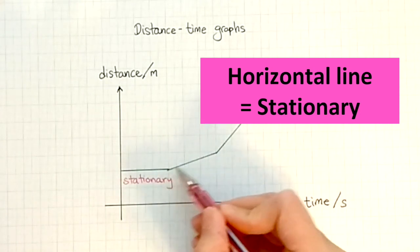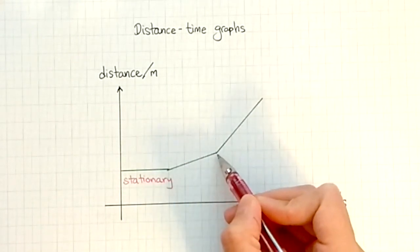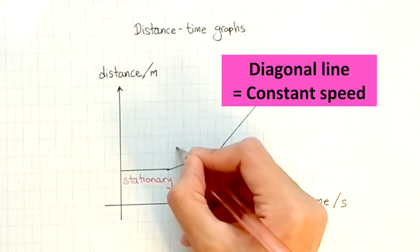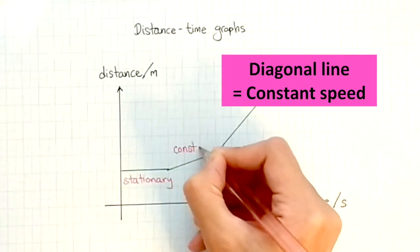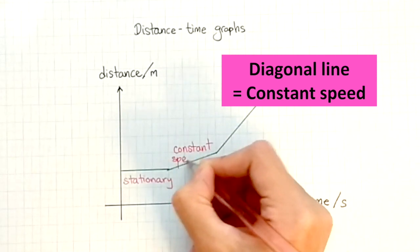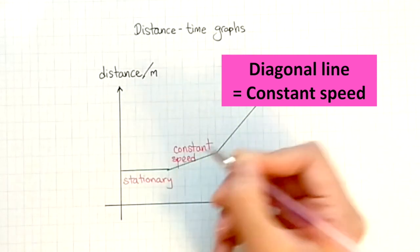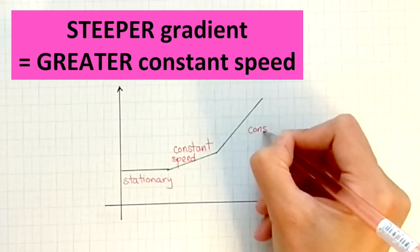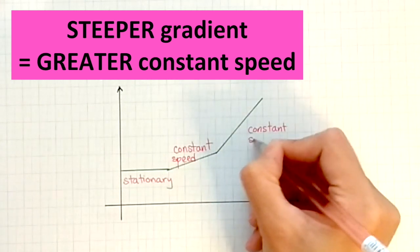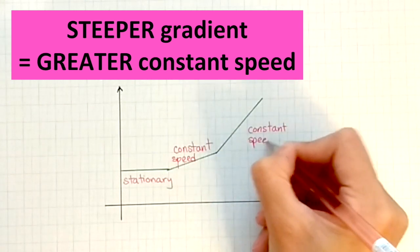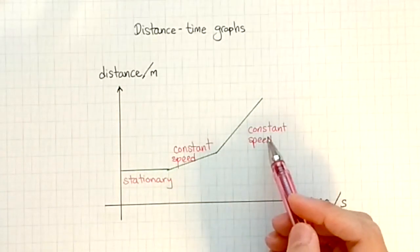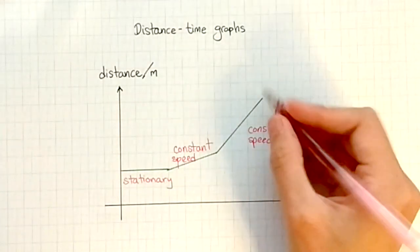If there is a slope or gradient, this means we get a diagonal line. The diagonal line will represent an object that's traveling at constant speed. If the diagonal line has a greater gradient, or in other words it is steeper, it means that it has a greater constant speed.